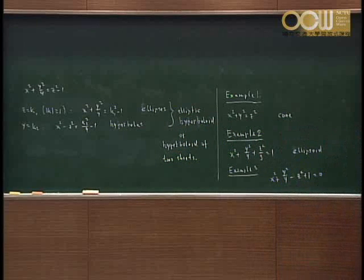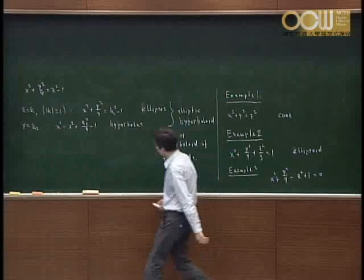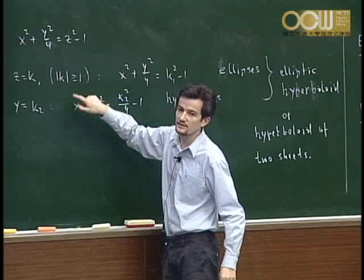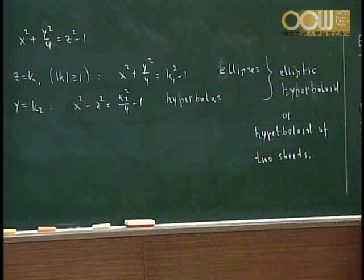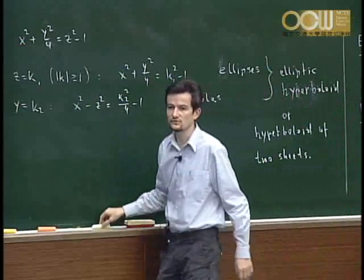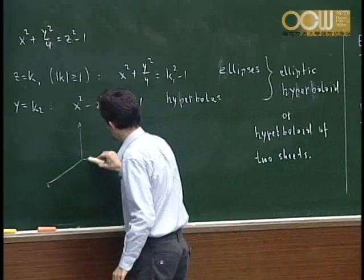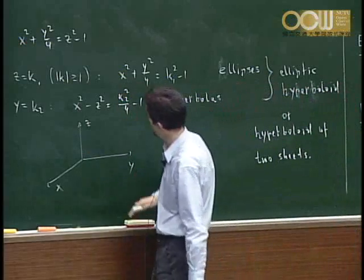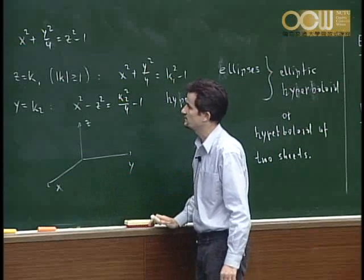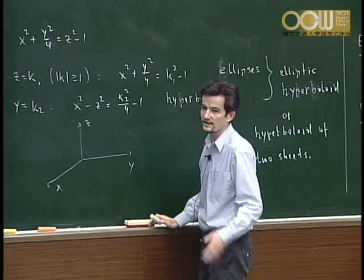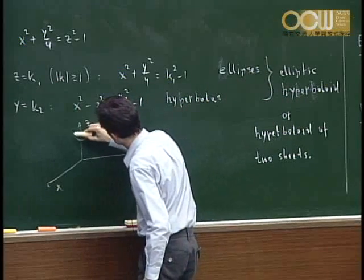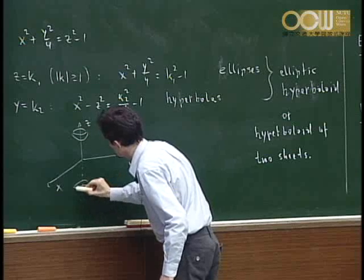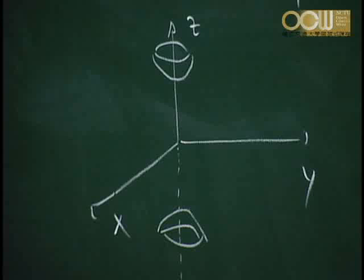It's called 'of two sheets' because z must be either ≥ 1 or ≤ −1 to get ellipses as cross-sections. So the surface has two disconnected pieces — or sheets — one above and one below, symmetric to each other.